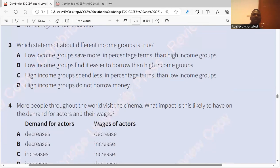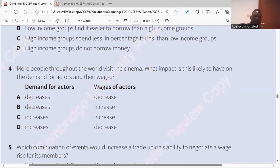Question three. Which statement about different income groups is true? Low income groups save more in percentage terms than high income groups? No way. Low income groups find it easier to borrow than high income? No. Let's see. High income groups spend less in percentage terms than low income groups. High income groups do not borrow. Yes, I see.